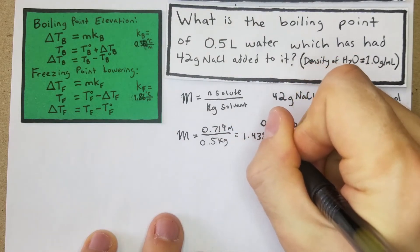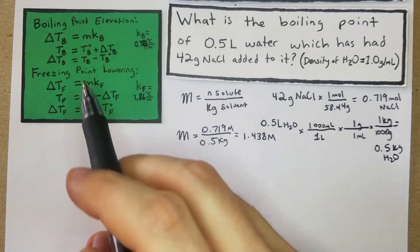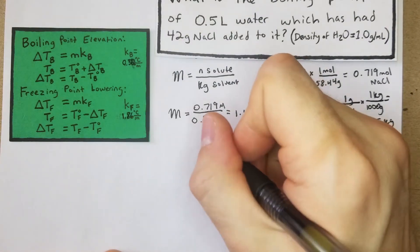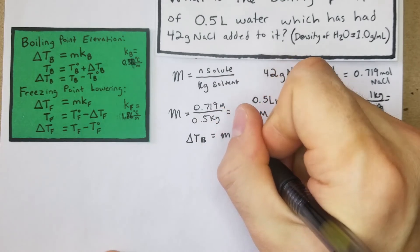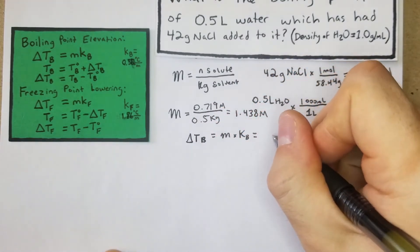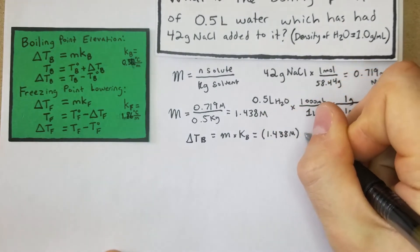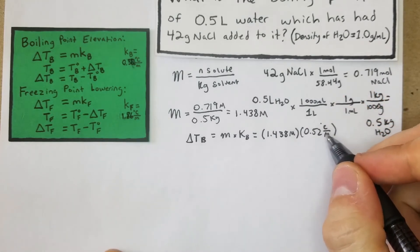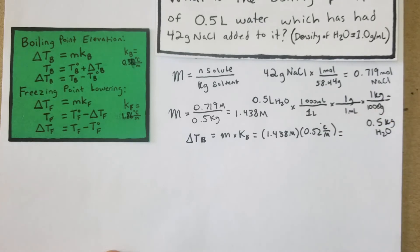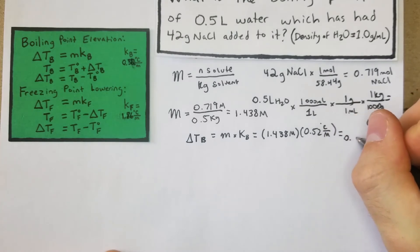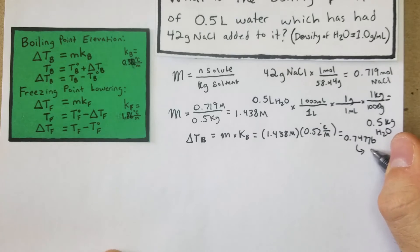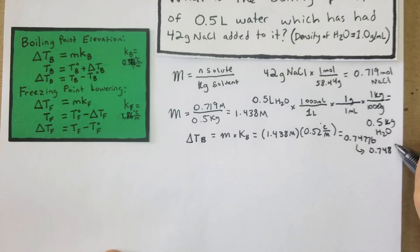We get 1.438 molal — that's the molality of this solution. Now we plug that into the colligative property formula: ΔTb = m × Kb = 1.438 molal × 0.52°C/molal. The molal units cancel, leaving us with temperature. We get 0.748°C.